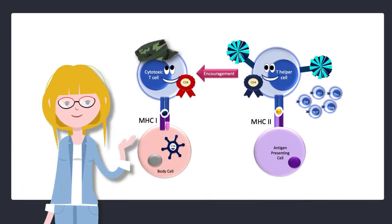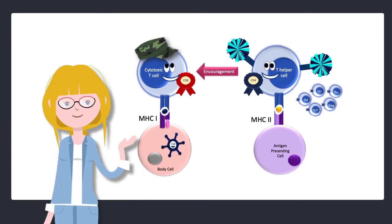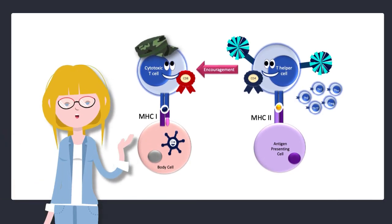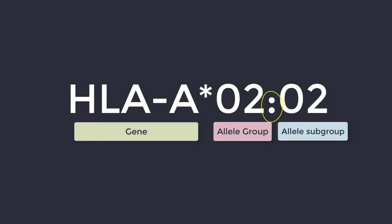Today we're not going to discuss specific disease associations — we'd never remember them anyway. Instead I wanted to focus on understanding HLA genes, molecular typing, and nomenclature. Nowadays when we describe a particular HLA gene we get very specific, down to the exact code for the unique molecule being generated, and we denote this in a particular way: we start with the HLA gene itself, then a star, then the allele group, then the allele subgroup with a colon in between.